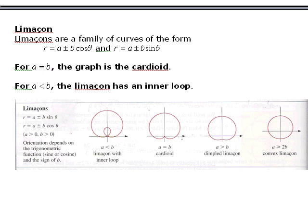Limaçons are another family of polar curves — it's a French word for snail. The form of the equation is r equals A plus or minus B times either cosine theta or sine theta. These limaçons do kind of look like snails. Their shape depends on the relative values of A and B: if A is less than B, it has an inner loop; if A equals B, you get a cardioid shape — which we also saw when looking at parametric equations as an epicycloid; and another case gives a dimpled shape.